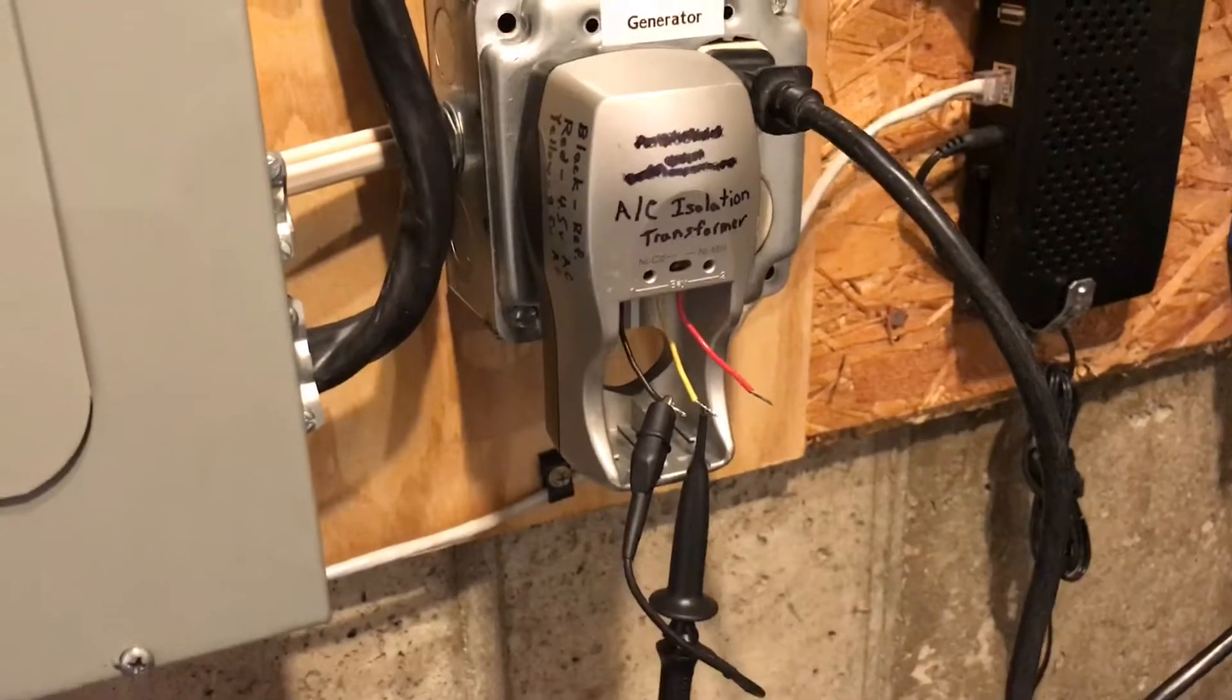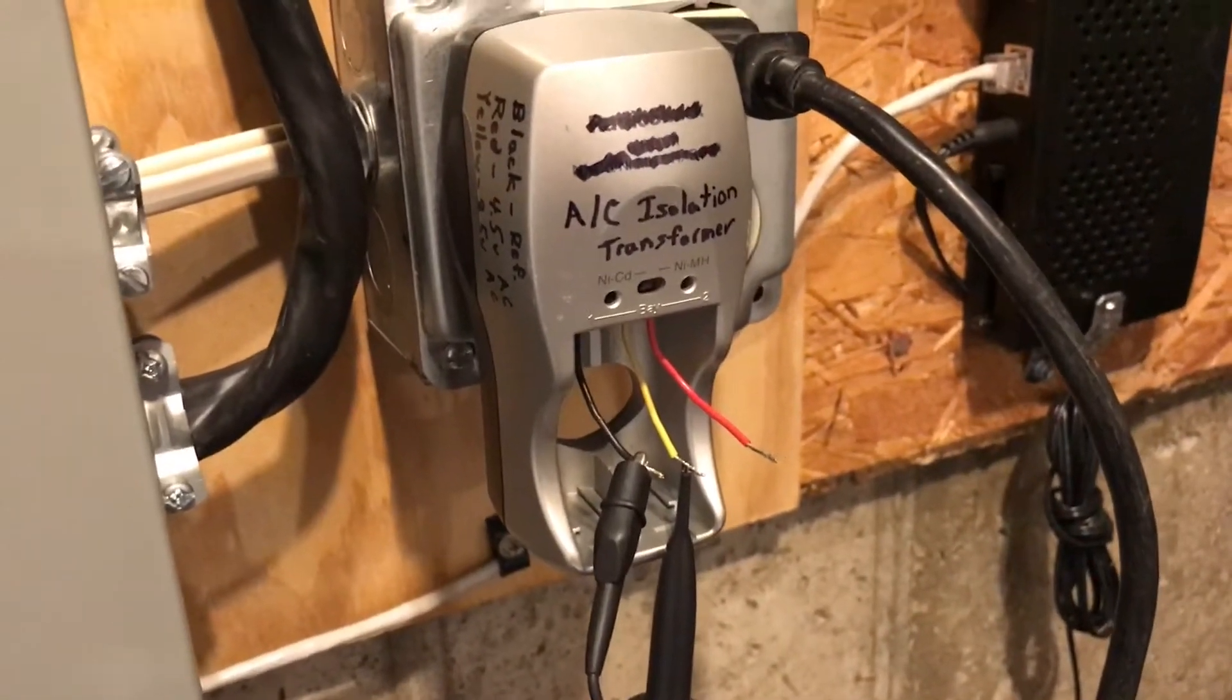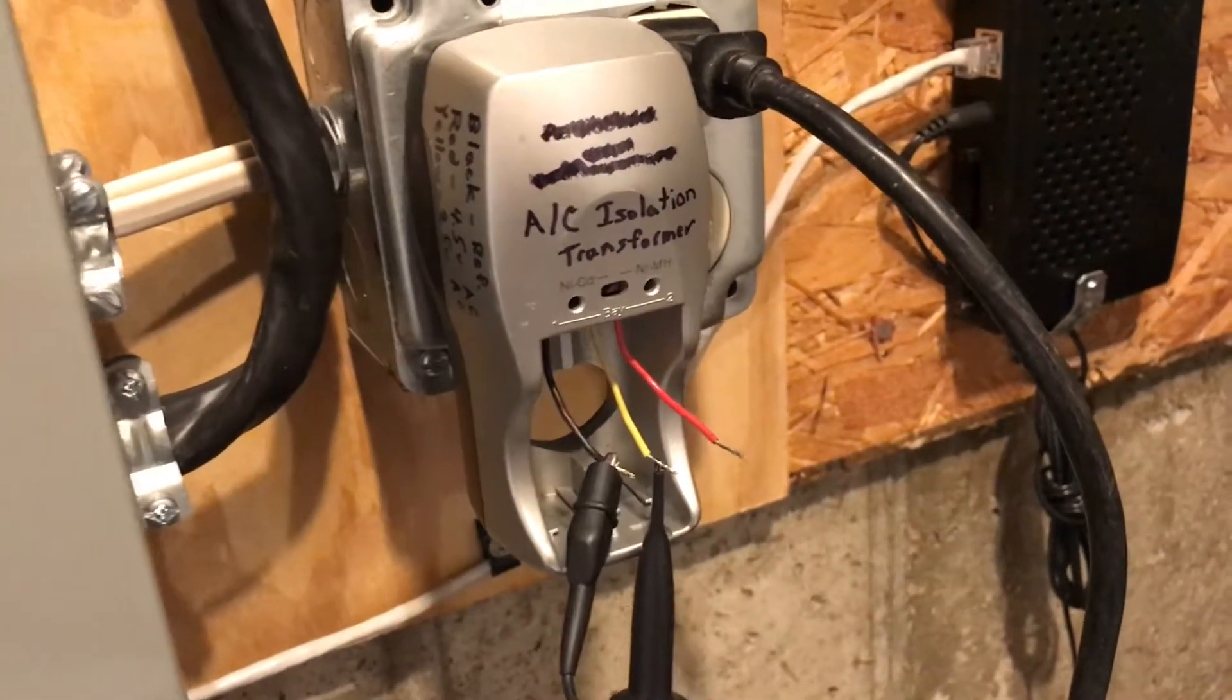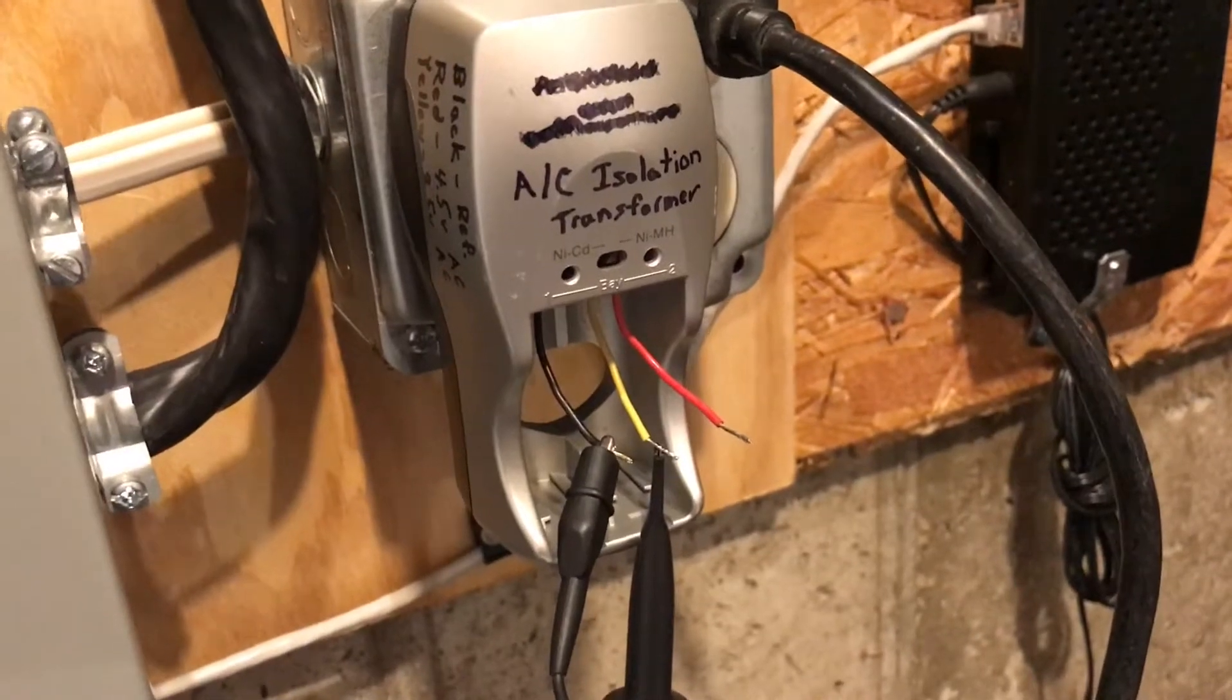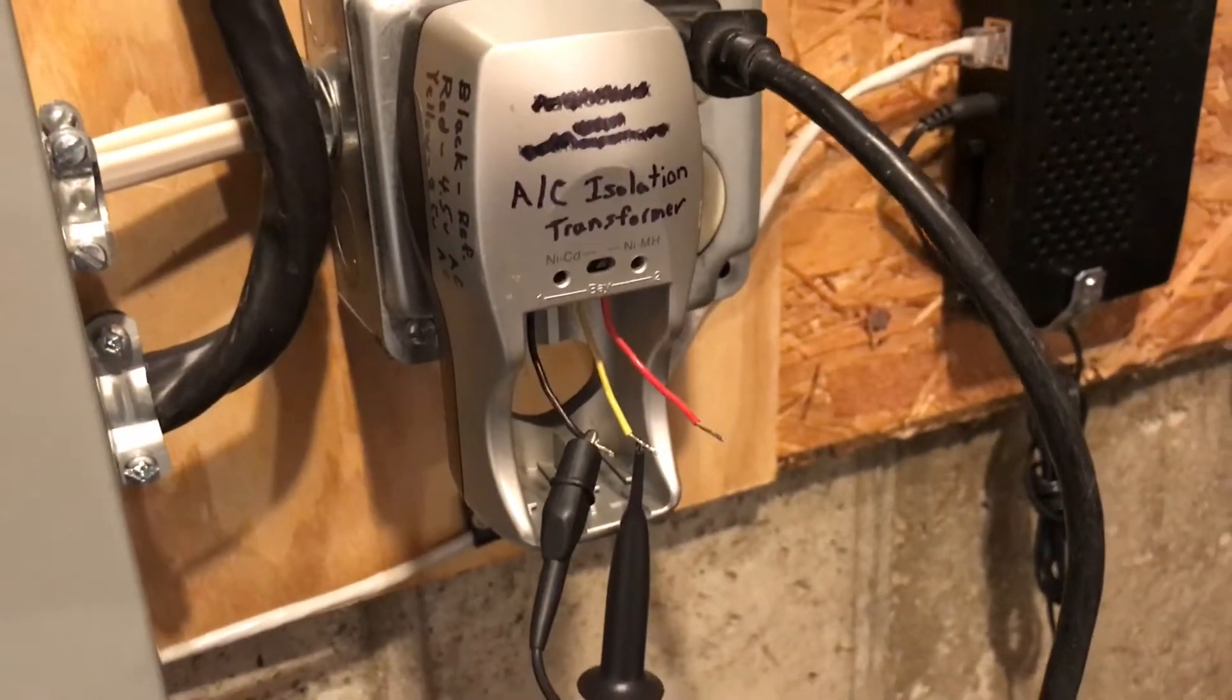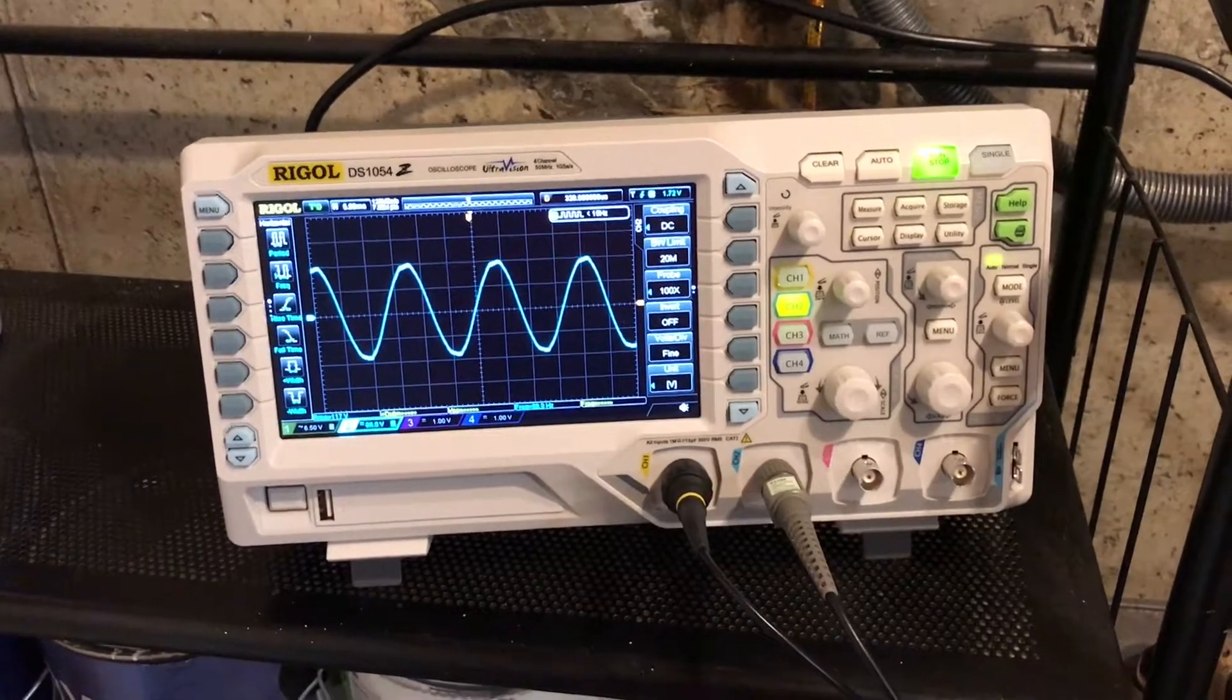I have Channel 1 being fed from this small AC isolation transformer that I scavenged out of an old Radio Shack battery charger, on just a regular 10-to-1 probe since it's outputting a very low AC voltage, I think about 8 volts. With this setup, I can see the two sine waves.